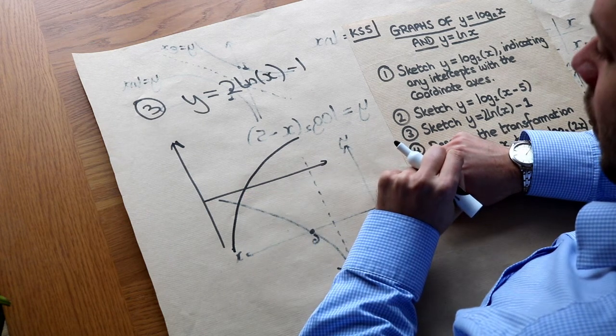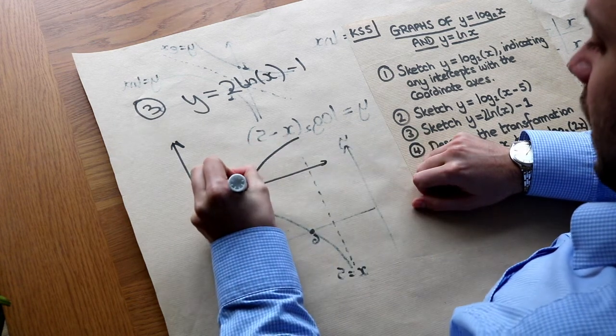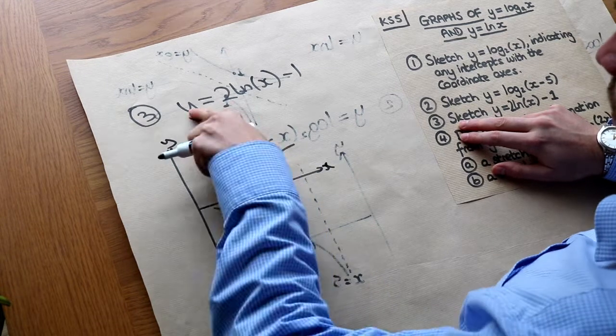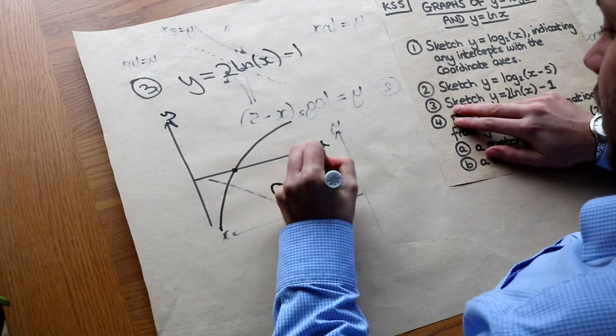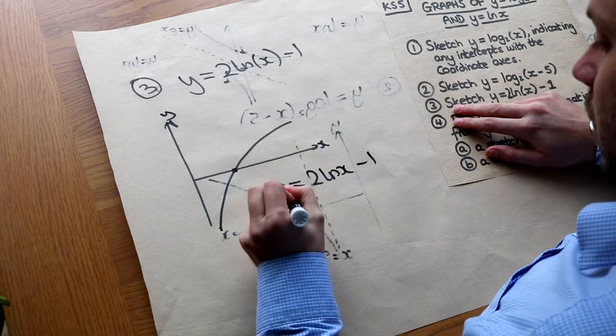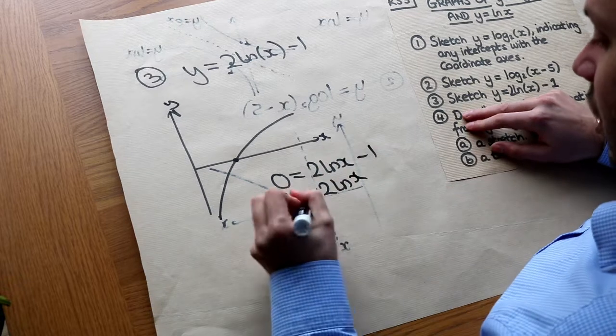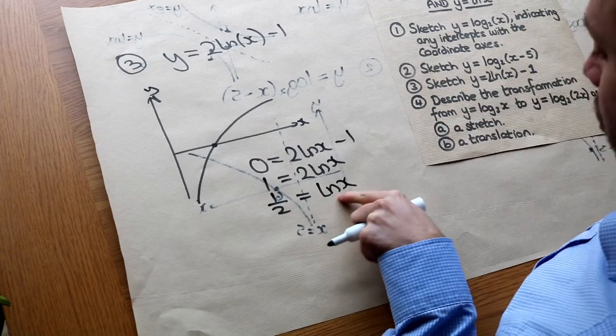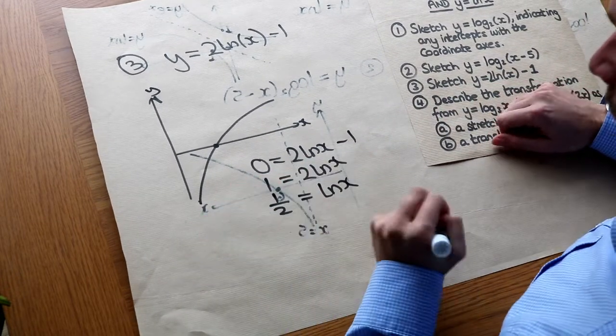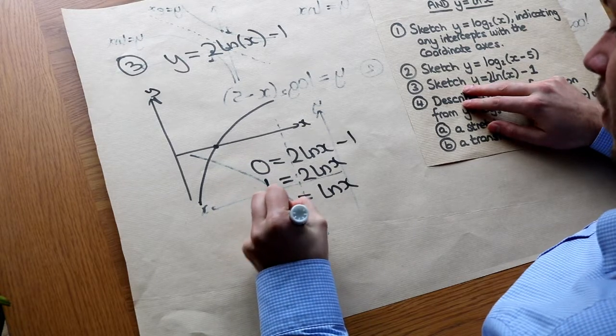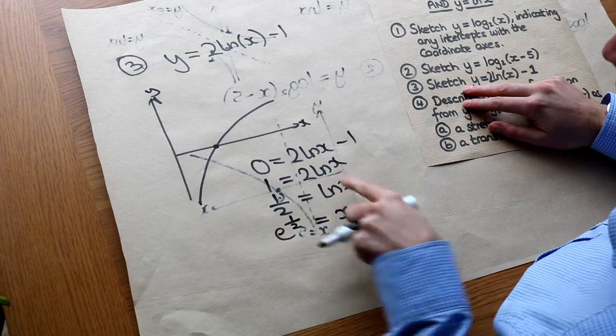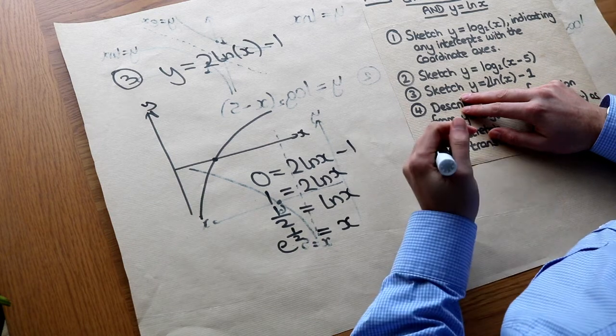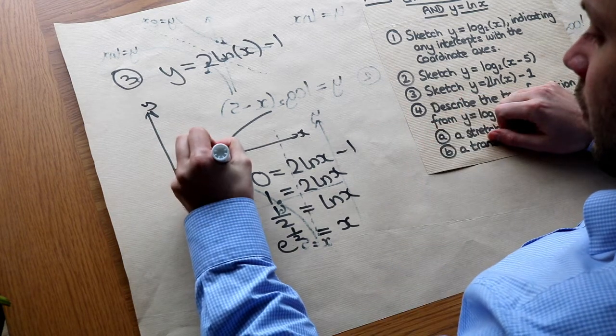So we're going to have to use a bit of algebra in order to work out what this new x-intercept is. Now we know to find the x-intercept of a graph we just need to make y 0. So if we make y 0 here, 0 is 2 ln x minus 1. Let's add 1 to both sides. Then we're going to half both sides, so we get ln x on its own. And then in order to undo that ln in front of the x, we do e to the power of both sides. So we get e to the half is equal to x, because the e to the power of gets rid of the ln, it cancels it out. So we've got e to the half, or the square root of e. And let's put that here. So it's the square root of e, which is a bit more than 1.